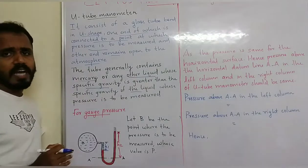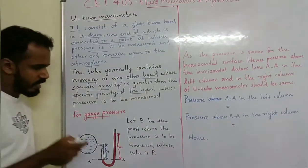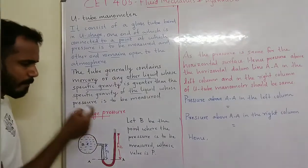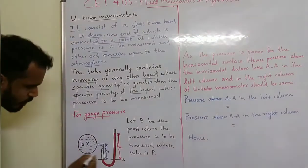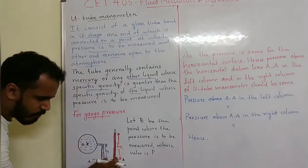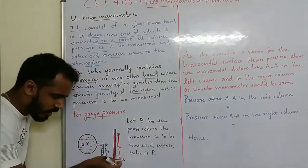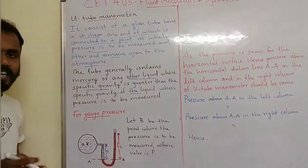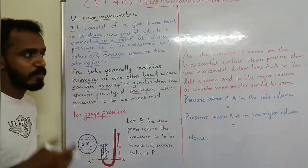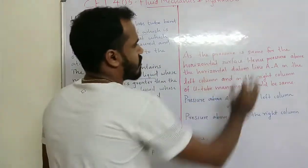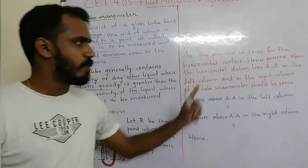We calculate gauge pressure and vacuum pressure. Let B be the point where the pressure is to be measured, whose value is P. We consider a datum line AA. Because of the horizontal surface, the pressure on the left side and right side will be the same. The pressure above the horizontal datum line AA in the left column and right column of the U-tube manometer should be the same.